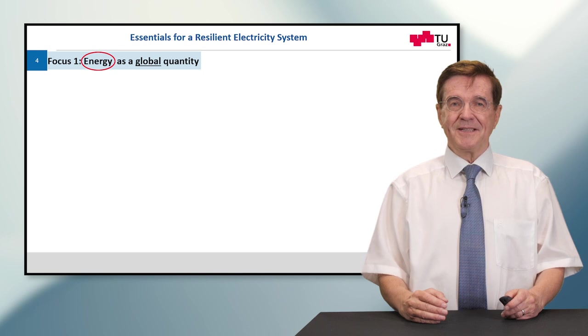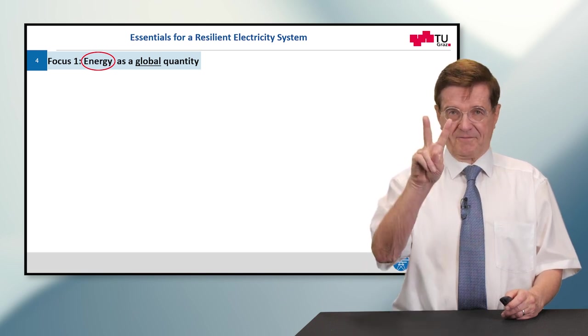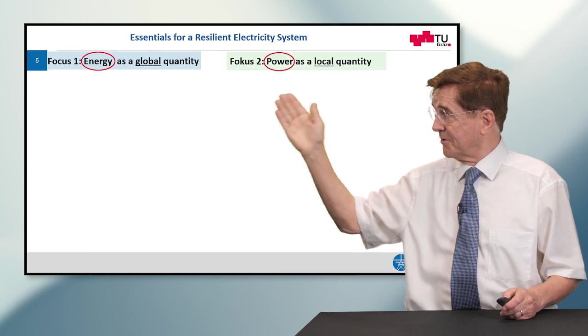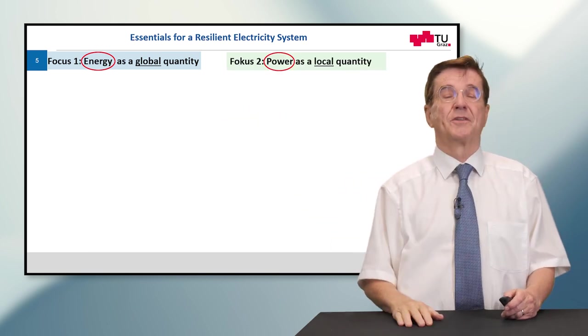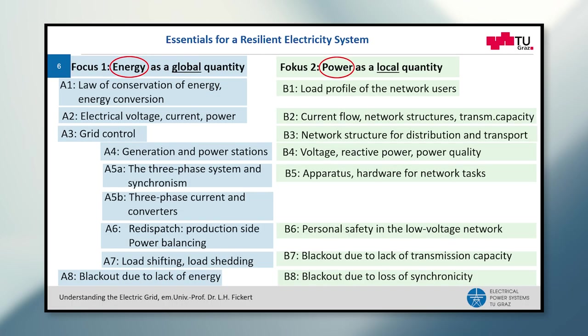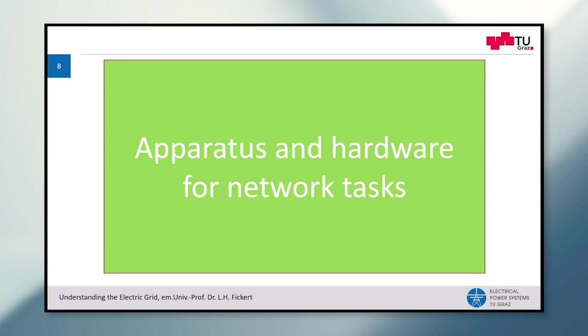To understand the electrical grid there are two focus lines. Focus line number one is energy as a global quantity. Focus line number two is power as a local quantity. And for the sake of completion I give you a full content of this course and today we concentrate on apparatus hardware for network tasks. And now let's get started.